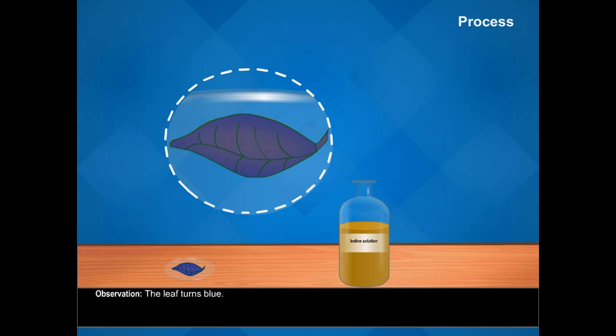Observation: the leaf turns blue. Conclusion: this shows that starch is present in the leaf.